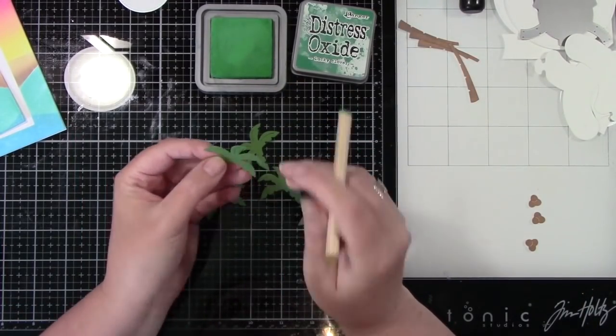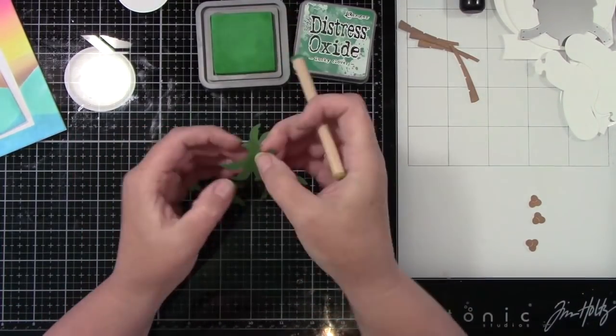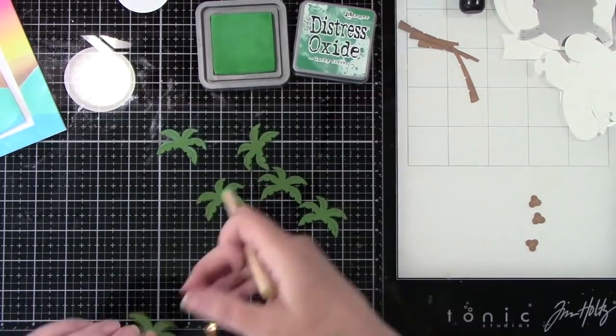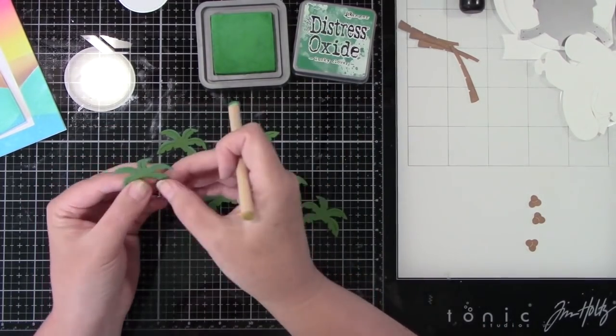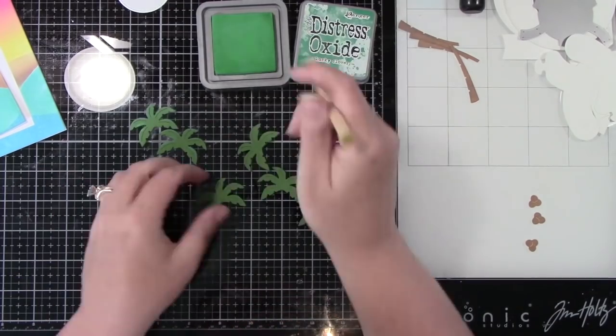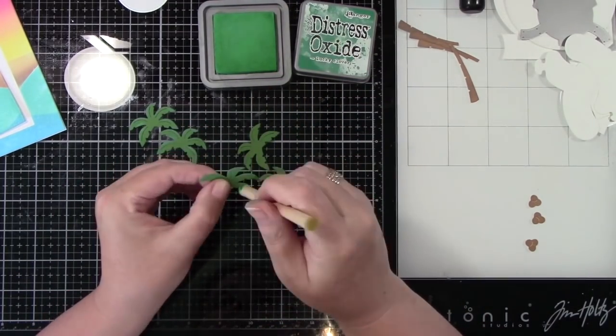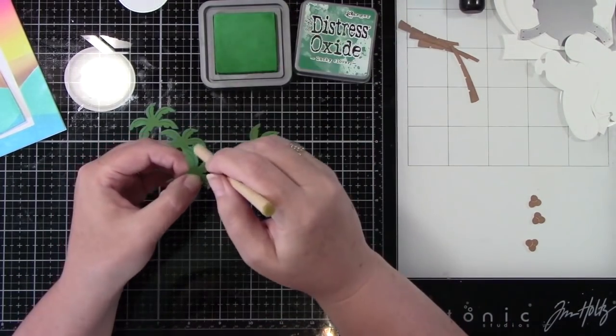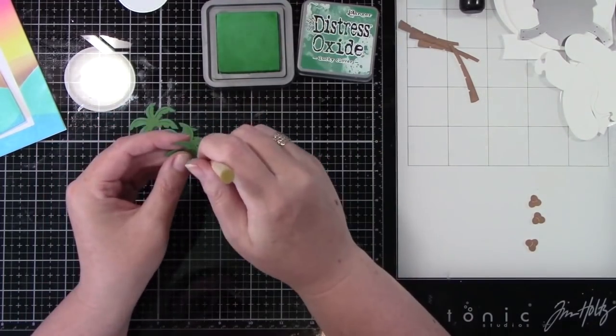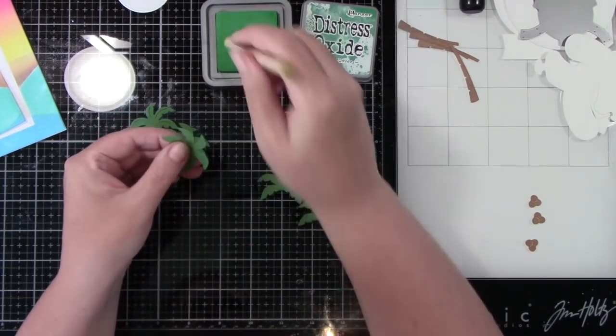And then I die cut the palm tree fronds from hammock and trees out of noble fir cardstock. And I'm coming in with lucky clover and just adding a few little highlights to each one of the palm leaves. Again, for a little bit more dimension.